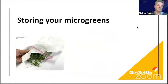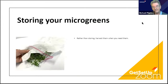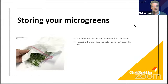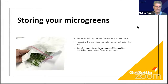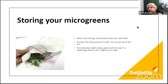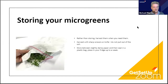How do I store microgreens? My first reply is: rather than storing, harvest them when you need them and let them store on the plant — it doesn't matter if it grows an extra inch. If you do need to store them, dampen two pieces of paper, put the microgreens between them, place in a plastic bag, seal it, and put it in the fridge. The dampness is the secret to keeping them fresh.